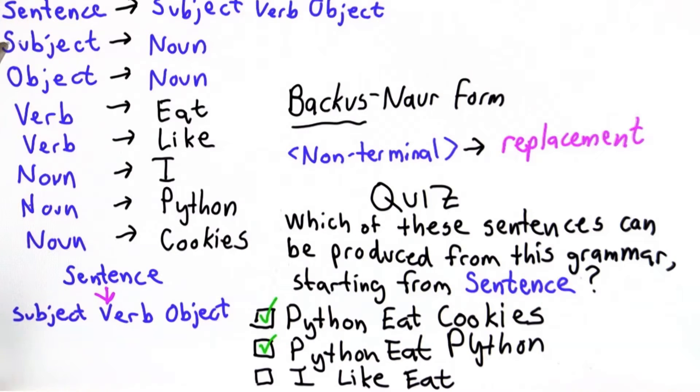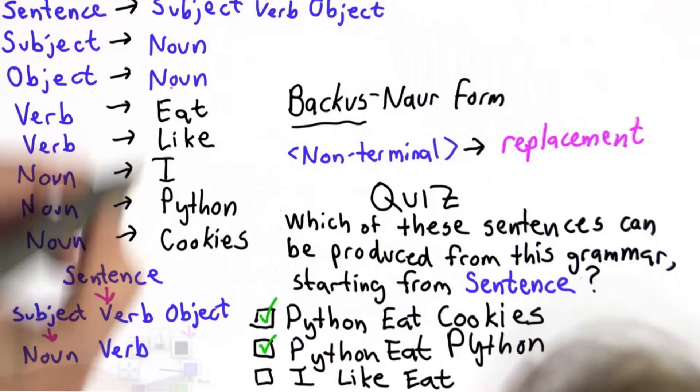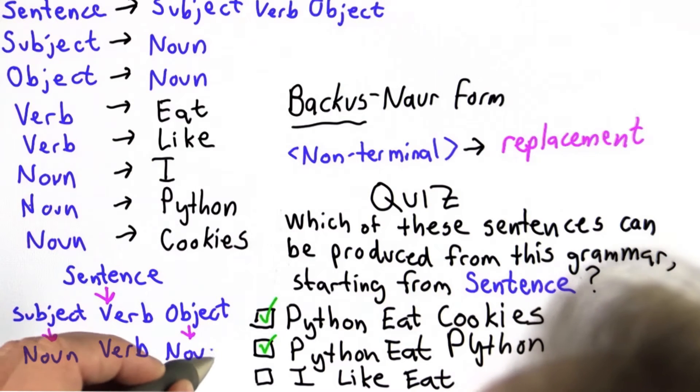We also only have one rule from subject and one rule from object. So we're always going to end up with noun, verb, followed by object, which also is replaced with noun.